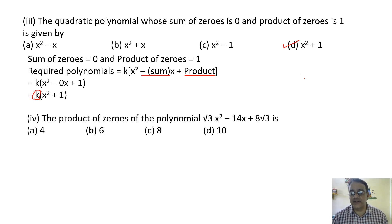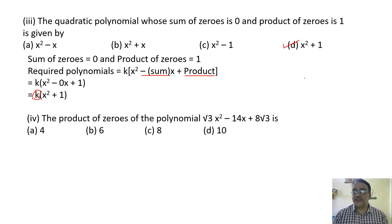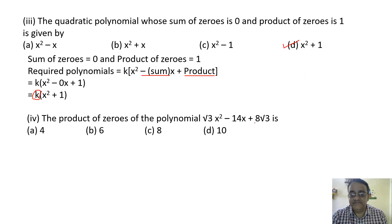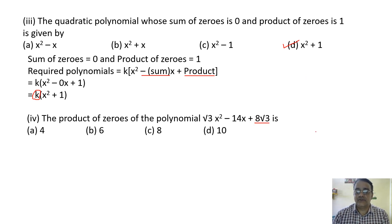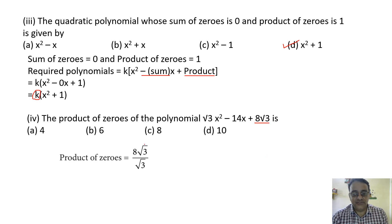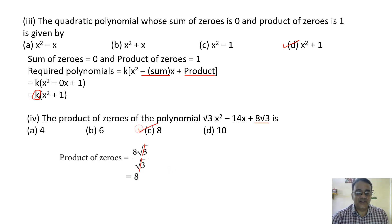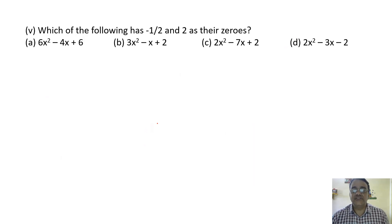The product of zeros of the polynomial root 3 x squared minus 14x plus 8 root 3 is given by the formula c by a. C here is 8 root 3 and a is root 3. So 8 root 3 upon root 3 — the root 3 cancels and we get 8. Correct option is C.